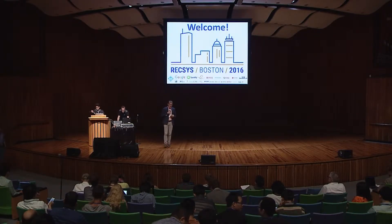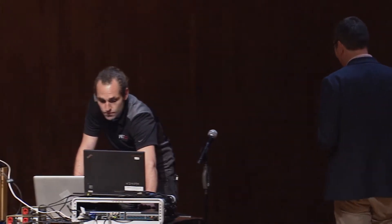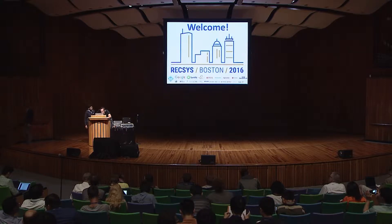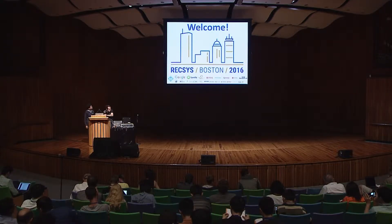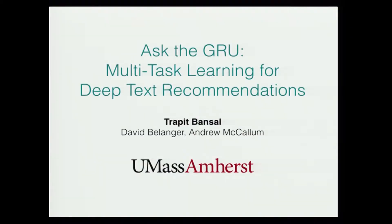We're moving on to the last long paper of our session this evening, presented by Trafit Bansal. It's called 'Ask the Guru: Multitask Learning for Deep Text Recommendations.' Hi everyone, I'm Trafit, and today I'll be telling you about new work using deep learning and recurrent neural networks to learn text representations which can achieve state-of-the-art results in cold start recommendations. This is joint work with David Belanger and Andrew McCallum at UMass Amherst.